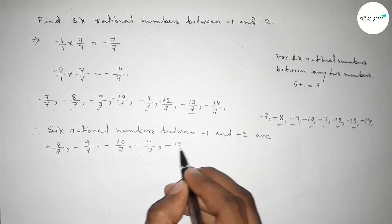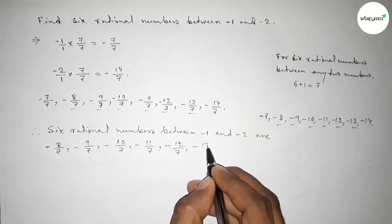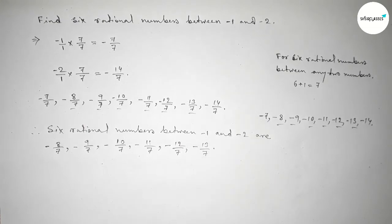So this is the process to find out six rational numbers between minus 1 to minus 2. So that's all, thanks for watching. Please share it with your friends.